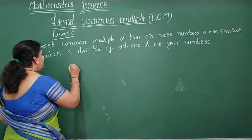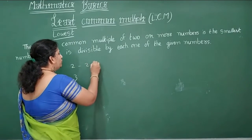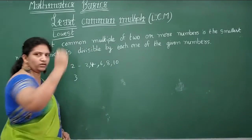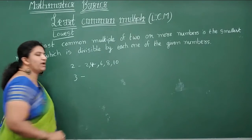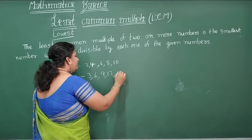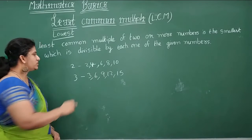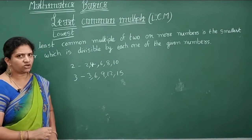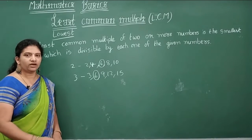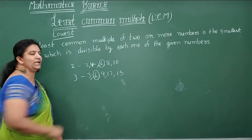Let me take any two numbers: 2 and 3. Multiples of 2 are: 2, 4, 6, 8, 10, 12, and so on — there is no end for it. Now see some multiples of 3: 3, 6, 9, 12, 15, and so on. We are learning about the least common multiple. In the 2 times table we get 6, and in the 3 times table we also get 6. So 6 is a common multiple of both.